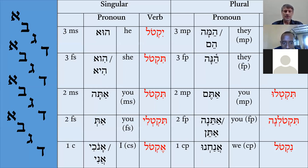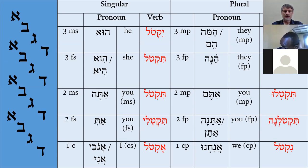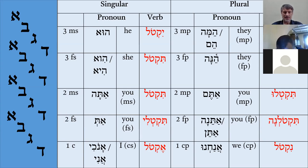This Yiqtol conjugation is also called the imperfect and also called the prefix conjugation. In different books you can find different terminology, but the meaning is the same. It is called the prefix conjugation because it is formed by adding prefixes to the root of the verb. It is called imperfect because the basic meaning of this paradigm is the future — an action that has not been finished yet. We will translate it as future tense for our convenience, though it can be used for other tenses as well.